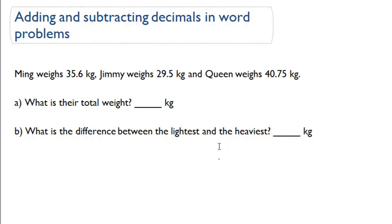Okay, so this word problem reads, Ming weighs 35.6 kilograms, Jimmy weighs 29.5 kilograms, and Queen weighs 40.75 kilograms.